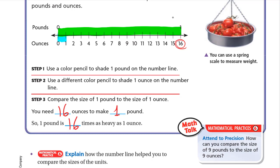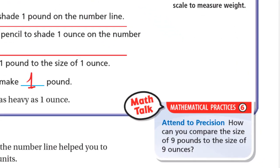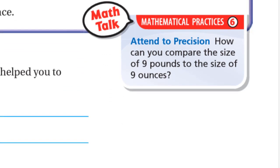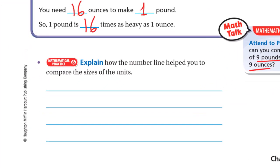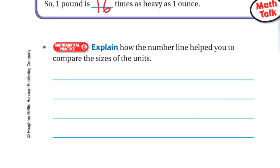So one pound is 16 ounces. If you want to convert pounds into ounces, you multiply by 16. For the math talk: how can you compare the size of nine pounds to the size of nine ounces? Because one pound has 16 ounces, nine pounds will certainly be greater than nine ounces. Nine ounces are less than one pound.